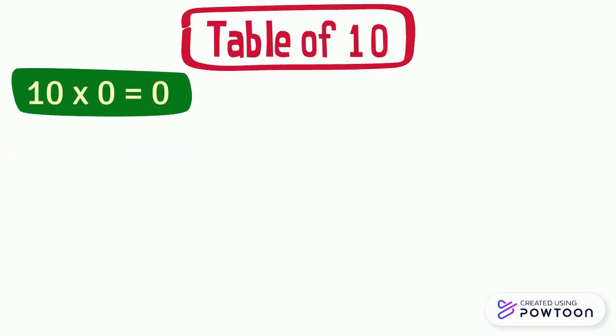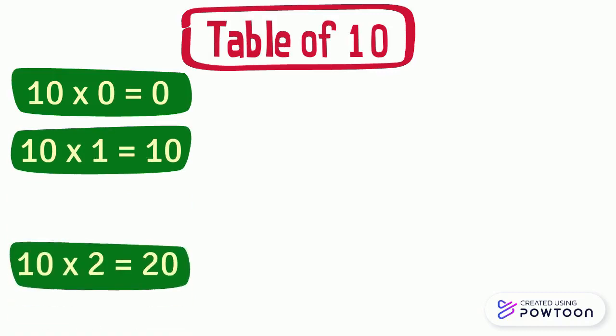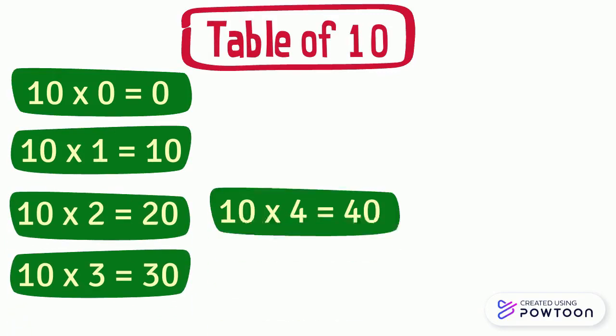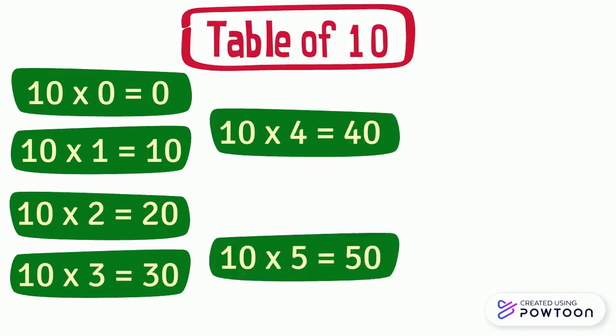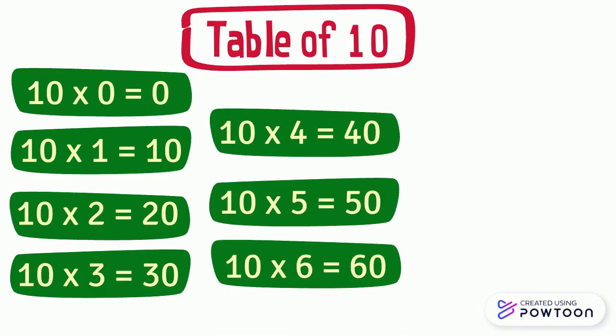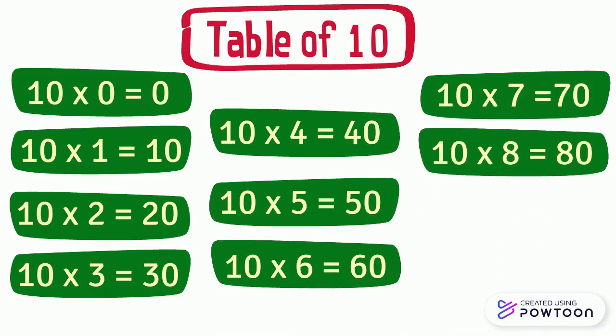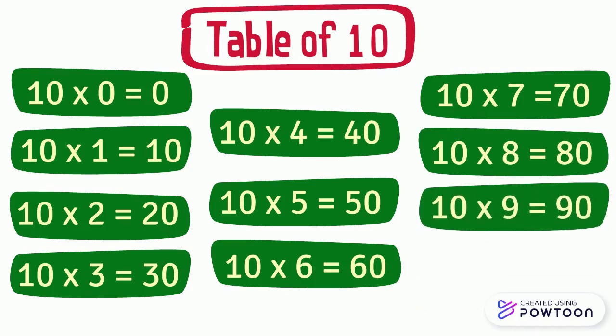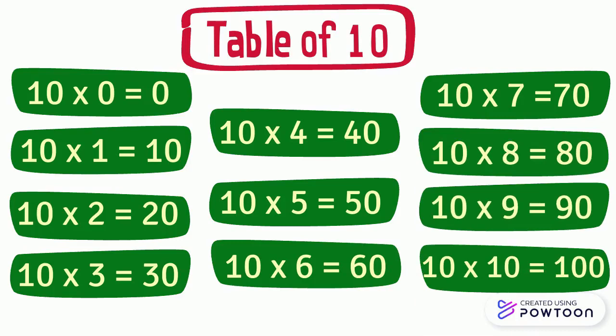10 times 0 equals 0. 10 times 1 equals 10. 10 times 2 equals 20. 10 times 3 equals 30. 10 times 4 equals 40. 10 times 5 equals 50. 10 times 6 equals 60. 10 times 7 equals 70. 10 times 8 equals 80. 10 times 9 equals 90 and 10 times 10 equals 100.